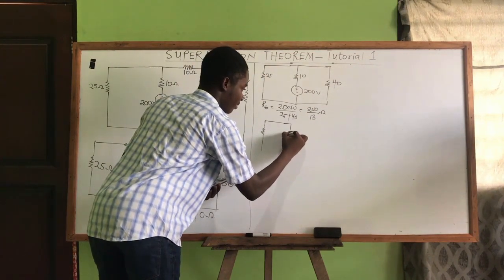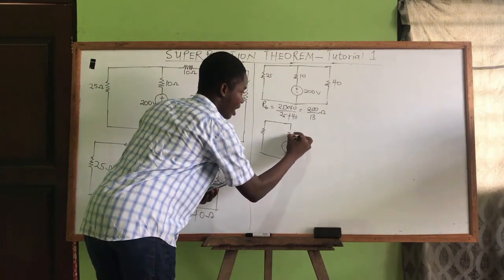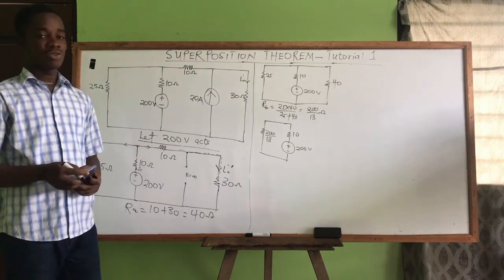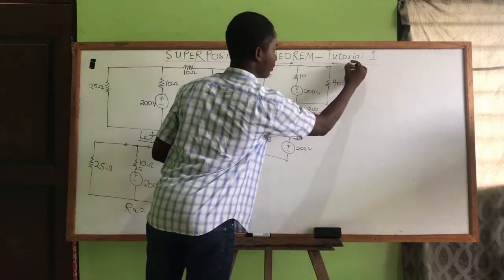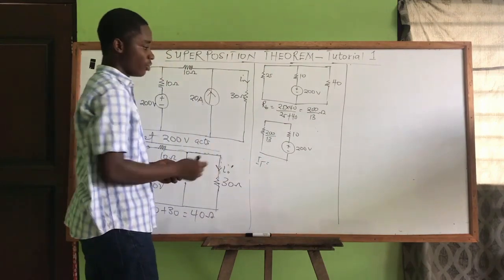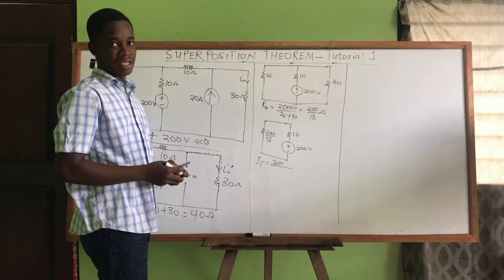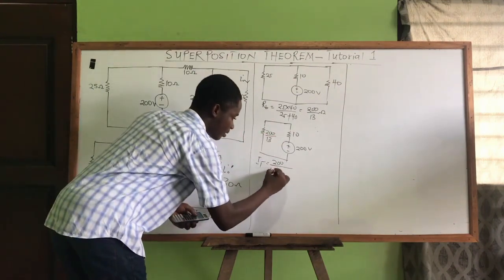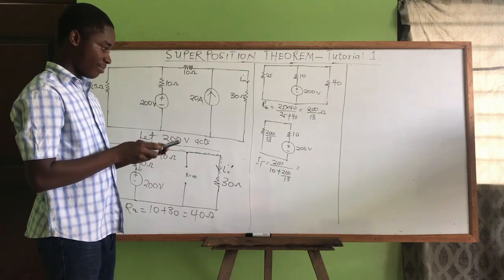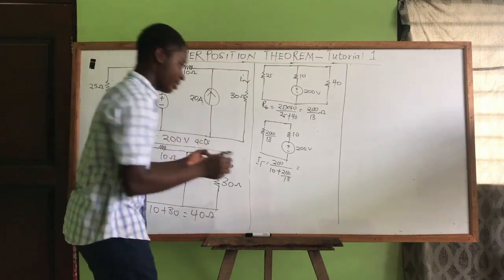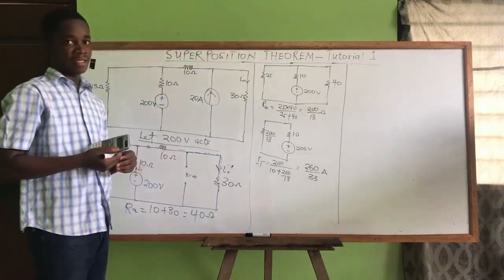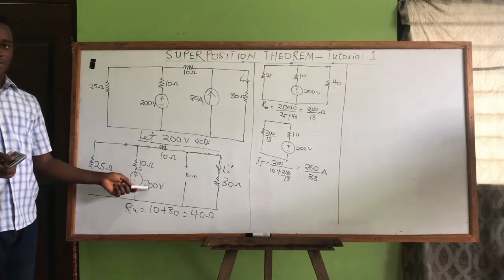The final simplified circuit has the 10 ohms, the 200/13 ohms equivalent, and the 200V source. The total current I_t = total voltage / total resistance = 200 / (10 + 200/13) = 260/33 amperes. That is the total current produced by the 200 volt source.